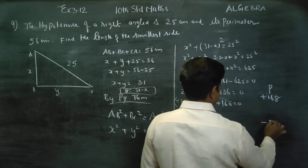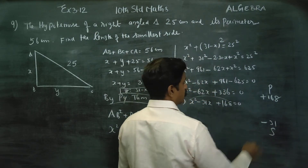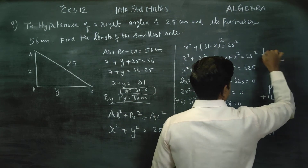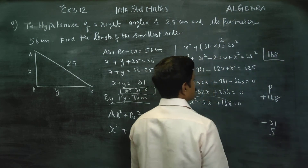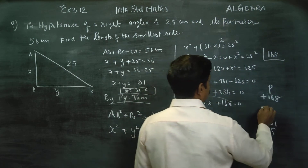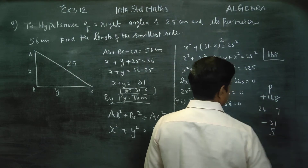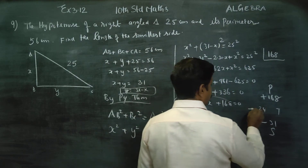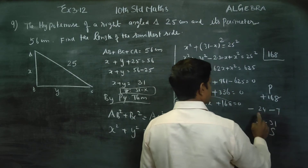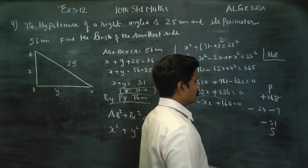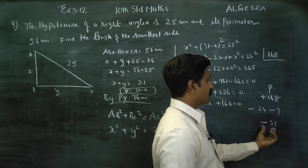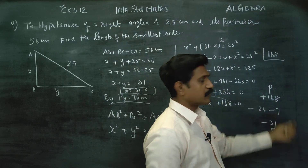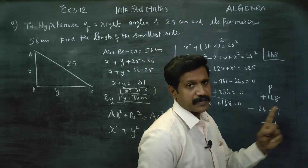The sum is minus 31 and the product is 168. The pair that works is 24 and 7, both negative: minus 24 and minus 7. Their product is 168 and their sum is minus 31. So we factor as (x minus 24)(x minus 7) equals 0. There is a match.